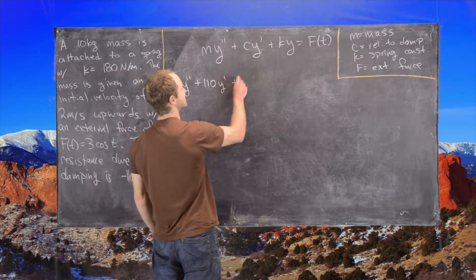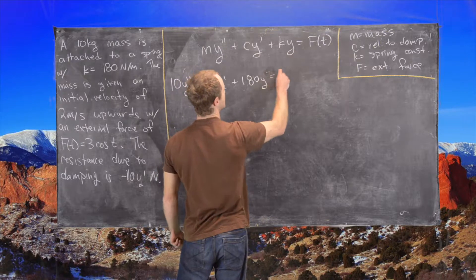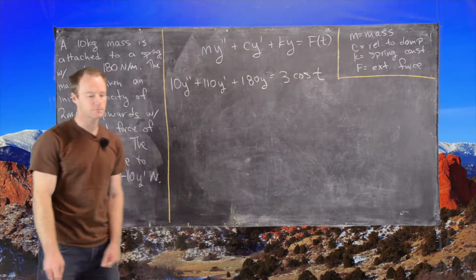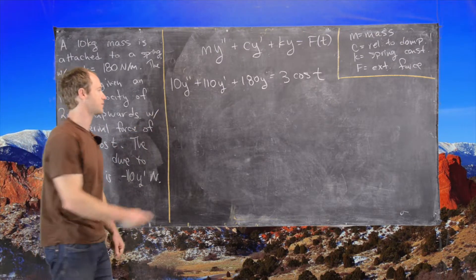And then plus 180 times y equals 3 cosine t. Let's go ahead and divide by 10 because it looks like we can do that pretty nicely.